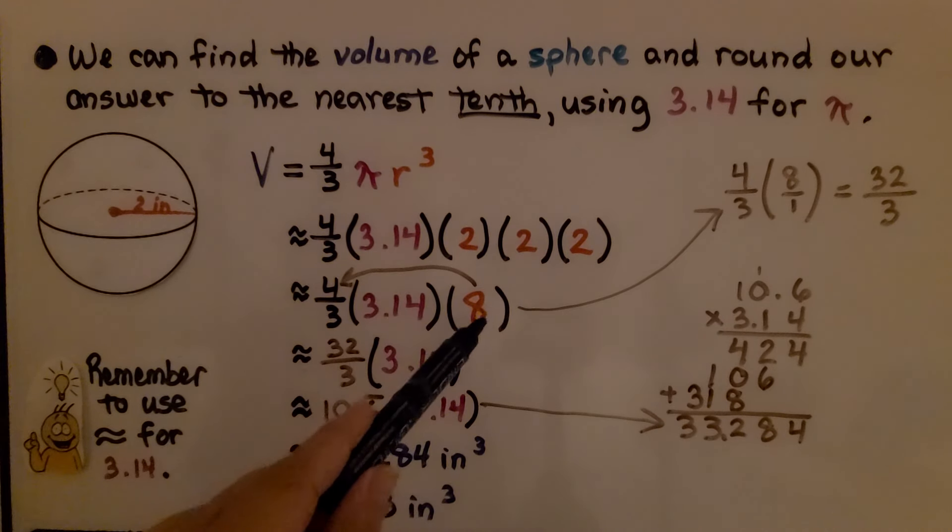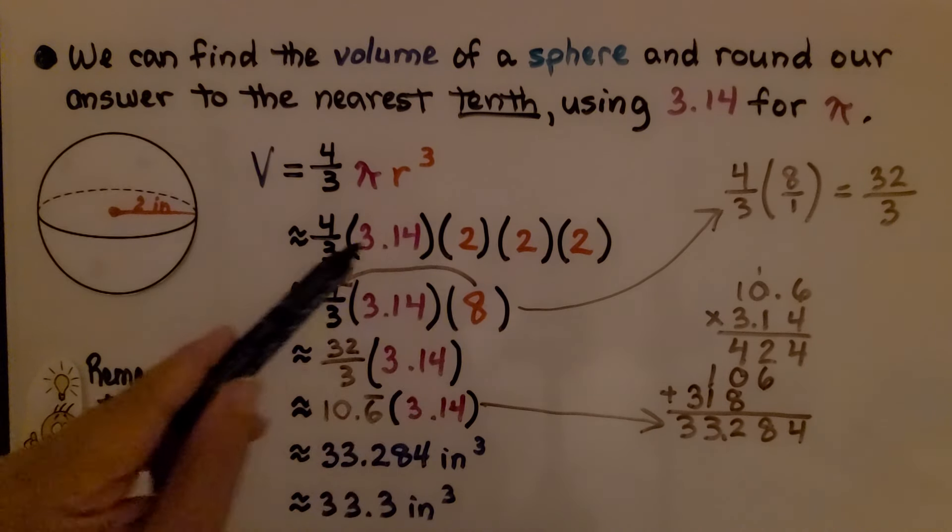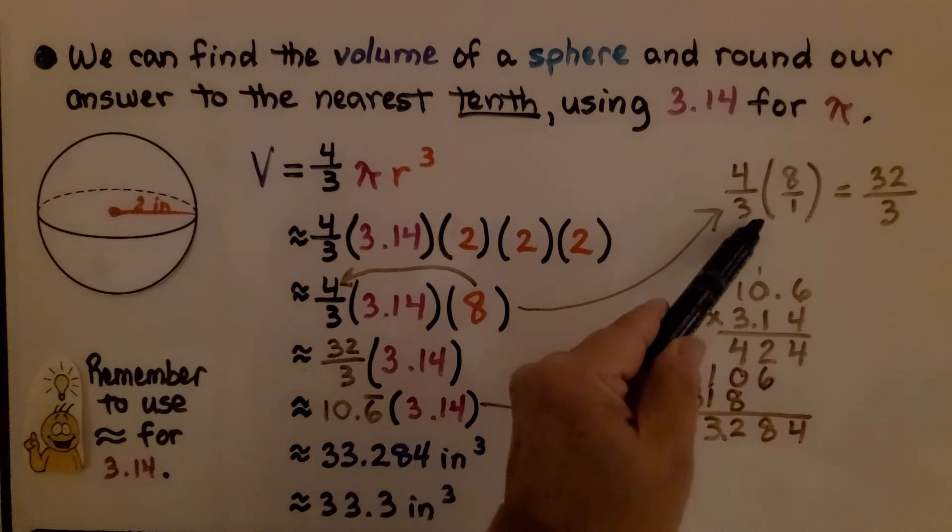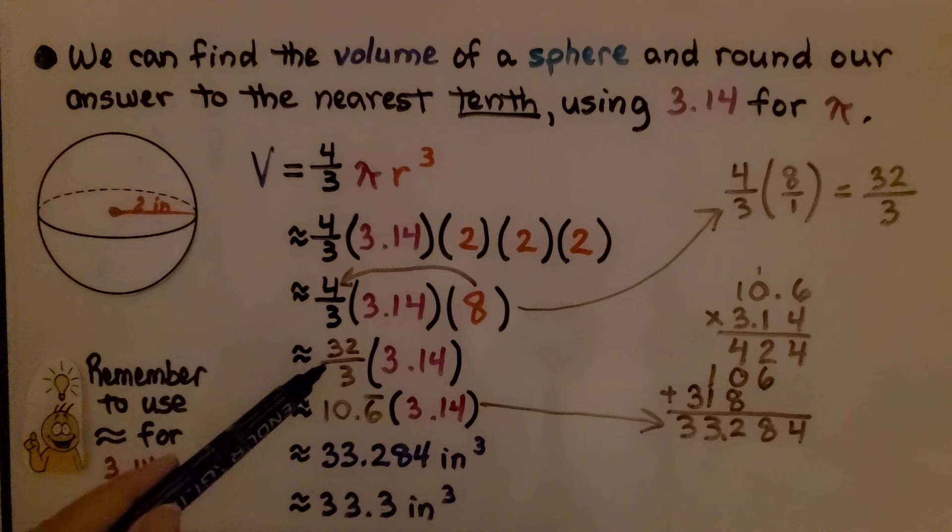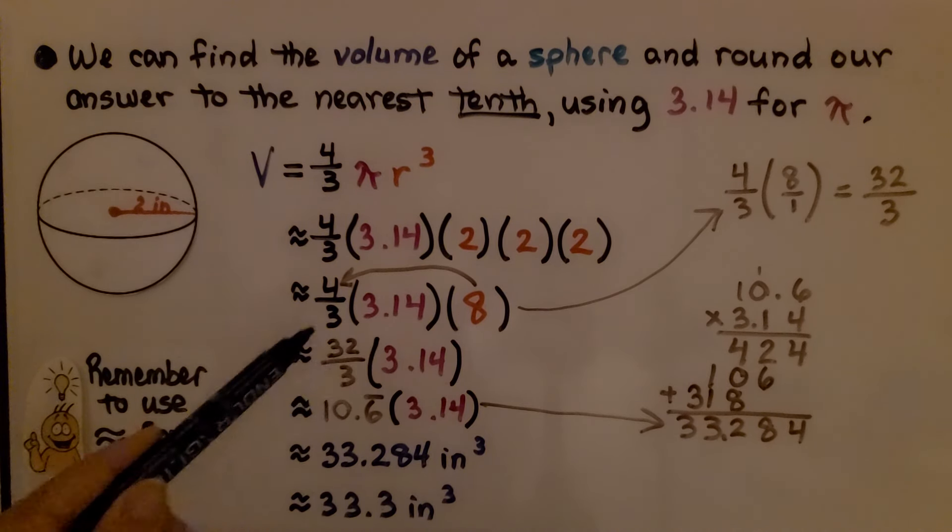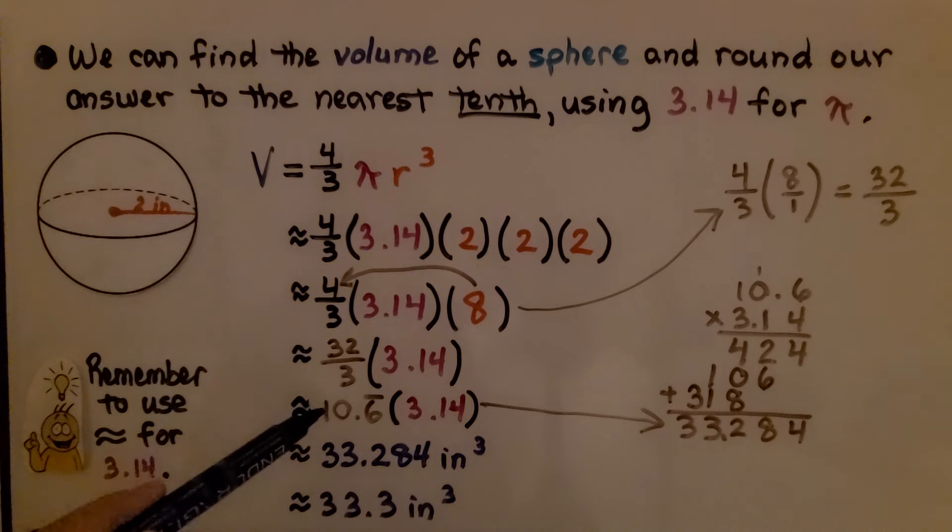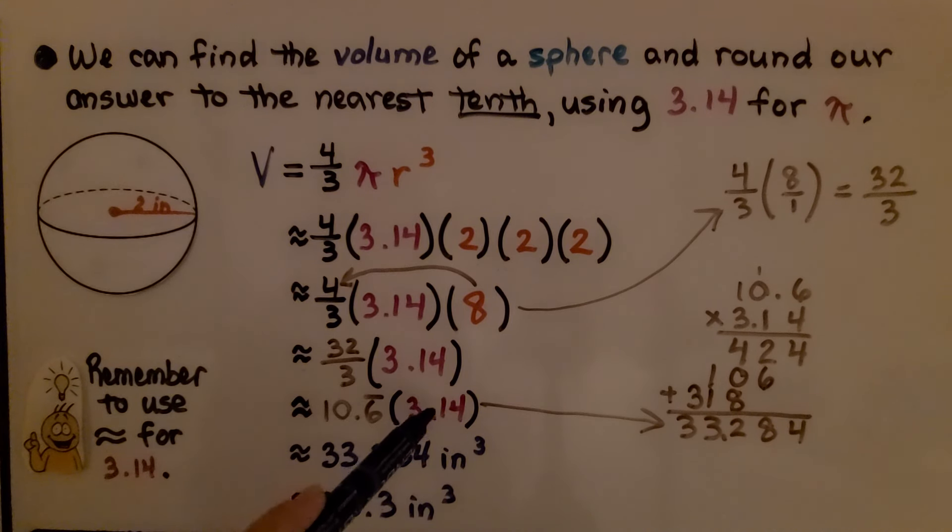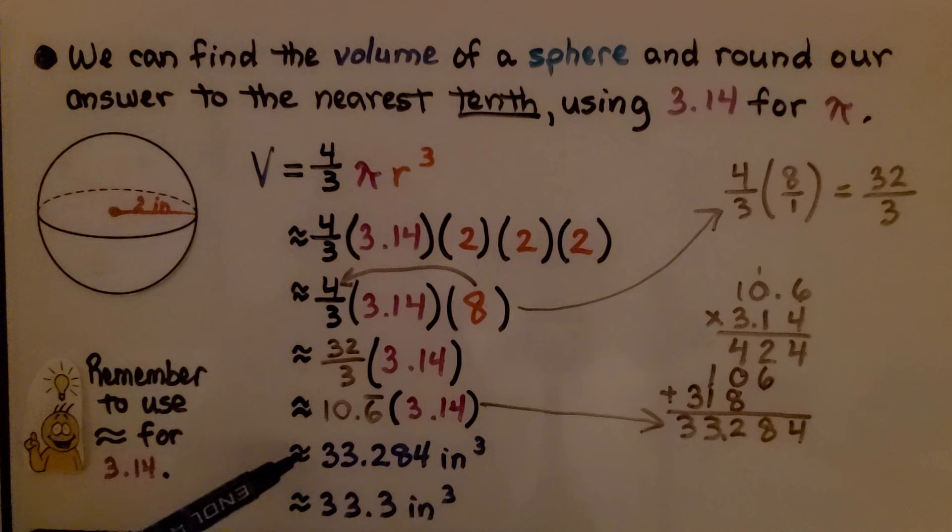2 times 2 is 4, times 2 is 8, and we can multiply the 8 to the 4 thirds right away. That'll give us 32 thirds. We multiply that by the 3.14, and 32 thirds is about 10.6, and this 6 is going to repeat. We multiply them together and we get approximately 33.284 inches cubed.